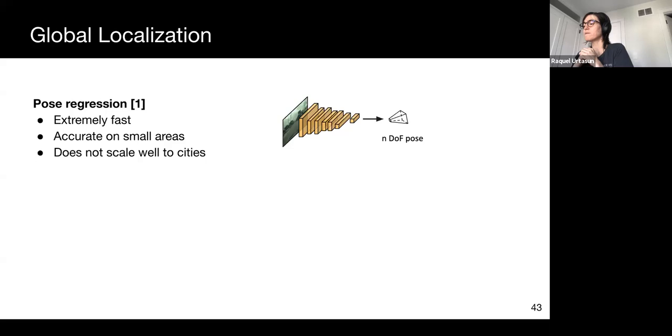There are two main approaches for this problem. Pose regression and retrieval-based localization. Pose regression takes images or lidar point clouds as input and directly outputs the pose for the query. This method is extremely fast. Yet there is a lot of evidence that these methods do not achieve good accuracy at city scale.